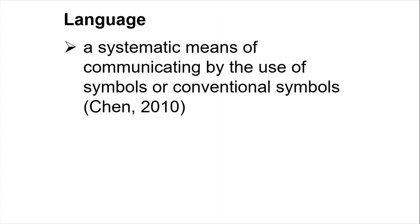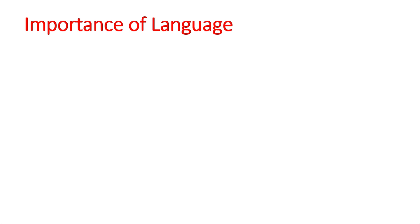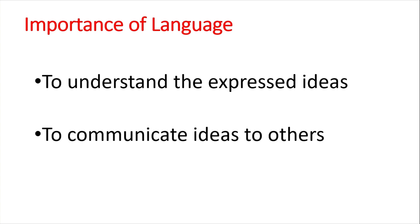What is a language? According to Chen 2010, it is a systematic means of communicating by the use of symbols or conventional symbols. Language is a means of communicating — it is a code humans use as a form of expressing themselves and communicating with others. The importance of language is, number one, to understand expressed ideas and to communicate ideas to others.